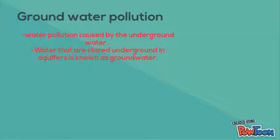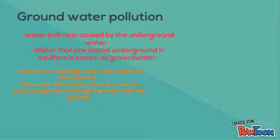Groundwater pollution is water pollution caused by contaminants in the underground water. Most of our drinking water is supplied by these water sources. For example, chemicals that are used in people's gardens can seep through the drain into the ground.